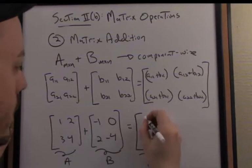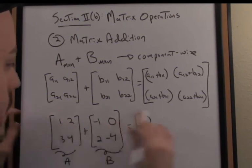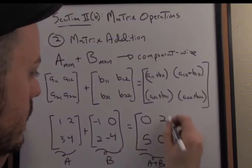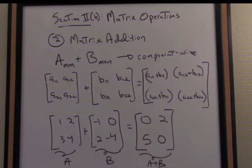So what do we have? Negative 1 plus 1 is 0, 2 plus 0, of course, is 2, 3 plus 2 is 5, and 4 minus 4 is 0. So there is the resultant matrix A plus B.